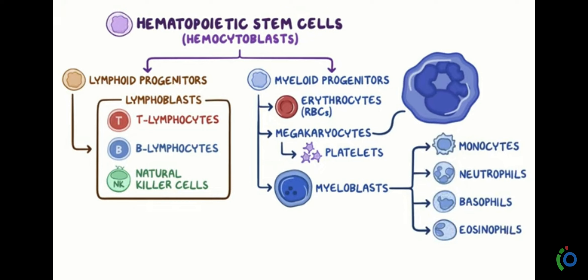Lymphoid progenitors form three types of lymphoblasts: T lymphocytes, B lymphocytes, and NK cells. T lymphocytes, also known as T cells, come from the bone marrow and go into the thymus. Inside the thymus, they mature and form T cells and different types of T cells which are related to recognizing foreign invaders.